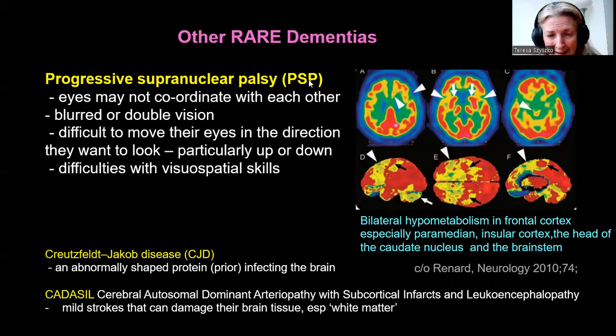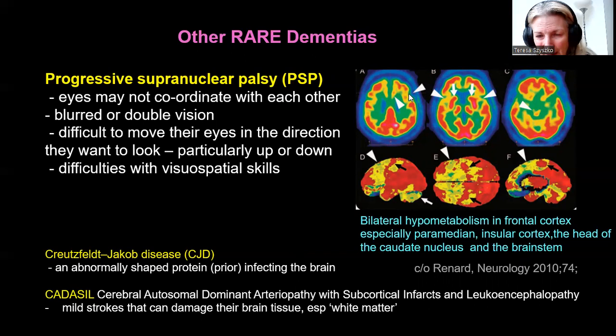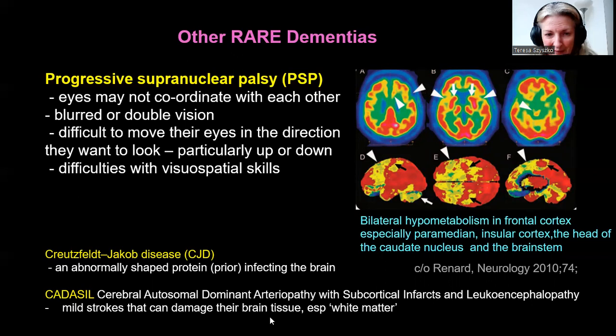Other rare conditions include PSP, where there are issues with coordinating eye movements, which can be quite difficult to diagnose. It's a very specific neurological question — I've only seen this come across twice as a request from a neurologist. You get hypometabolism in the frontal cortex, insular cortex, and also in the brainstem. Other dementias we don't tend to image on PET include Creutzfeldt-Jakob disease, but they're worth including in the differential list.